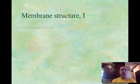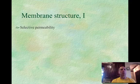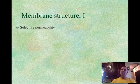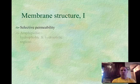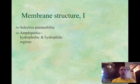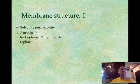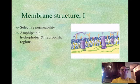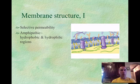When we think about the plasma membrane, we think about its selective permeability, which means it allows some things in while keeping other things out. This is directly due to the amphipathic nature of the phospholipid, which means it has both hydrophobic and hydrophilic parts to it. Hydrophobic means it has a water-fearing part, and hydrophilic means it has a water-loving part.